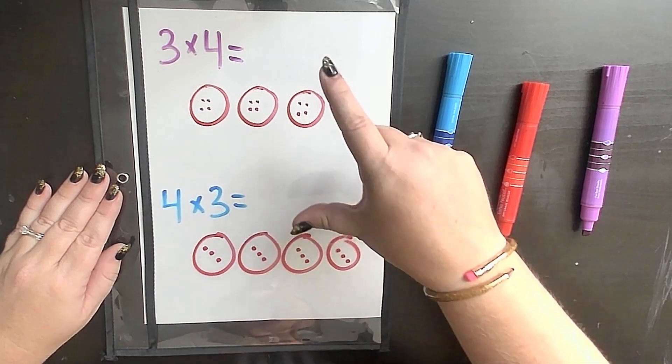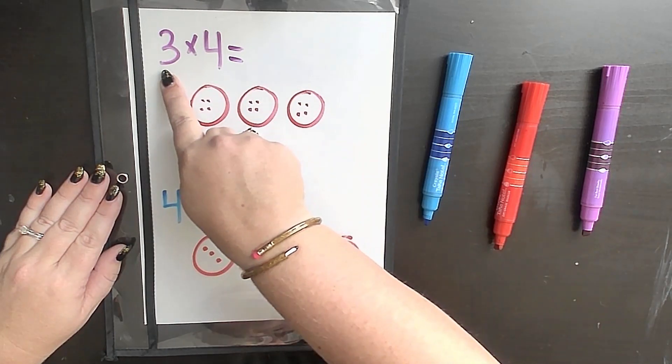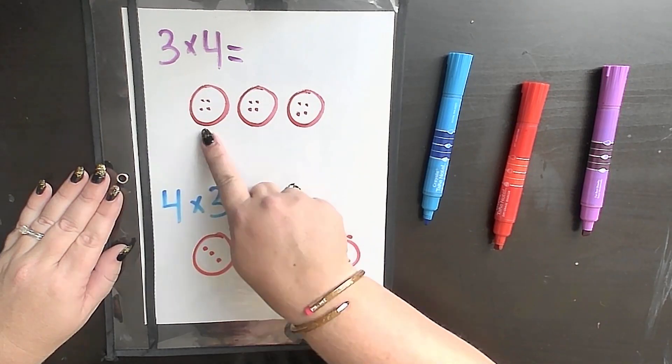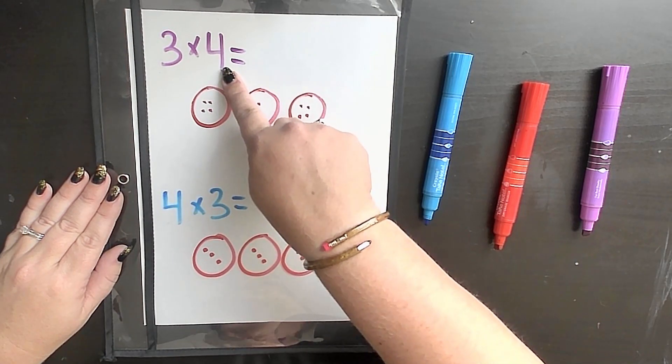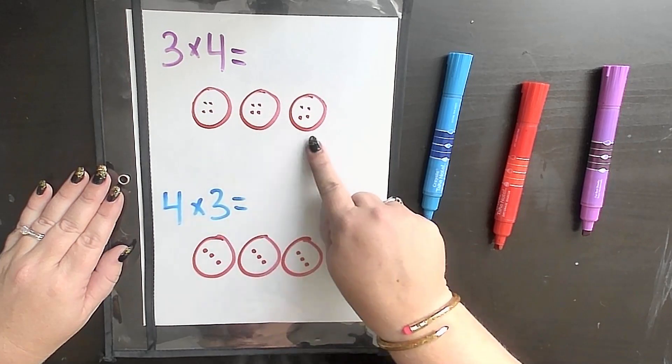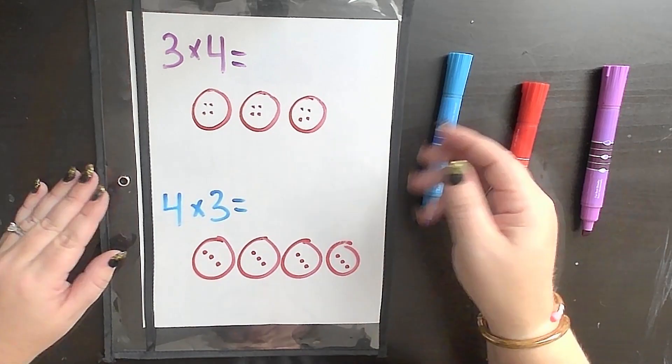So yes, of course, both of these products are 12. But remember, when we are modeling, we often use that first number as our groups, 1, 2, 3, and that second number of how many we have equally in each group, 4, 4, and 4. So yes, a quick reminder, 3 times 4 and 4 times 3 are the same answer.